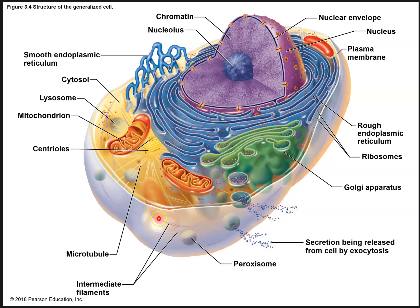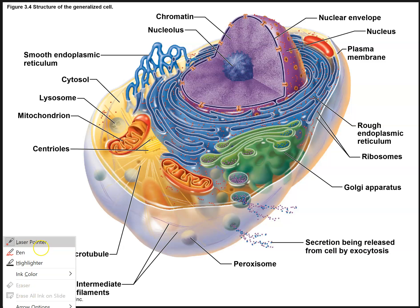Looking at a close-up structure of the cell: the plasma membrane is made up of a phospholipid bilayer. Animal cells do not have a cell wall, but plant cells and bacteria have an additional cell wall on the outside of the plasma membrane. The innermost region is the nucleus — this is the nuclear envelope, and these little pores are nuclear pores that are channels for passage of substances. The nucleolus is the region where ribosome assembly takes place and ribosomal DNA is made.